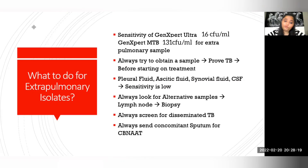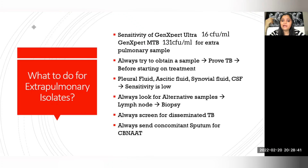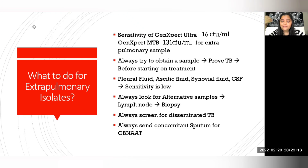The most important issue is what to do for extra-pulmonary isolates. The CB-NAT sensitivity for extra-pulmonary samples is not as high as for sputum. There are two types: Xpert MTB/RIF and the newer Xpert Ultra, which has higher sensitivity — detecting up to 16 bacilli per ml versus around 141 bacilli for the standard Xpert. Always try to obtain a sample and prove TB before starting treatment. Because sensitivity is low, patients with TB pleural effusion or TB meningitis will mostly be started on empirical ATT.